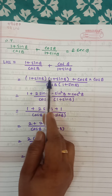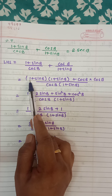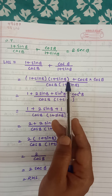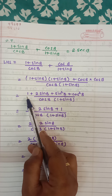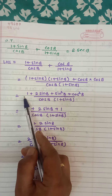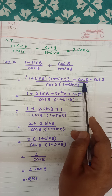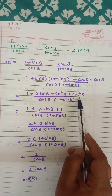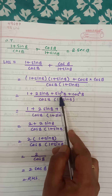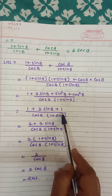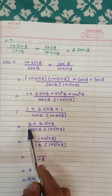Now multiply the two brackets. First multiply 1 by the bracket, then sin b by the bracket — or use the formula (a plus b)² = a² plus 2ab plus b². And cos b times cos b is cos²b. Now this gives 1 plus 2sin b plus sin²b plus cos²b. The value of sin²b plus cos²b is 1, so write 1. Denominator stays as it is.